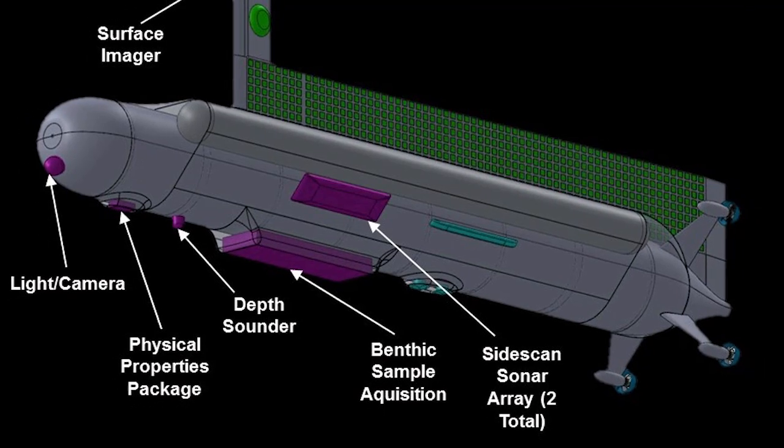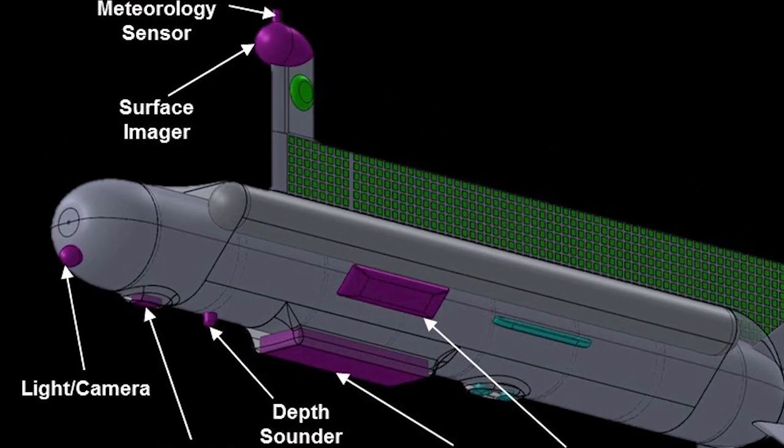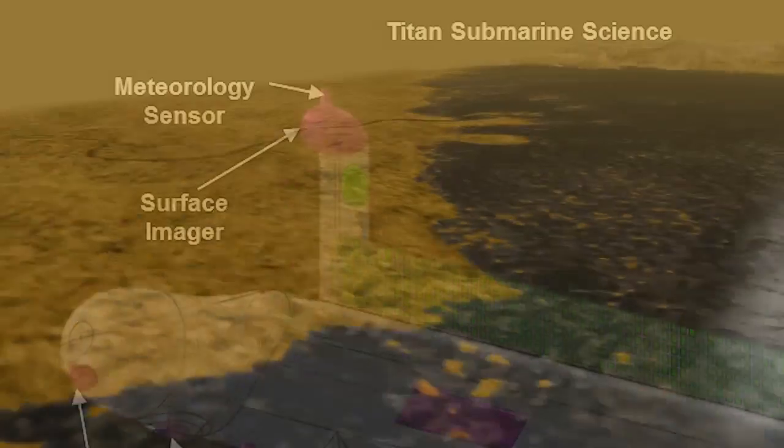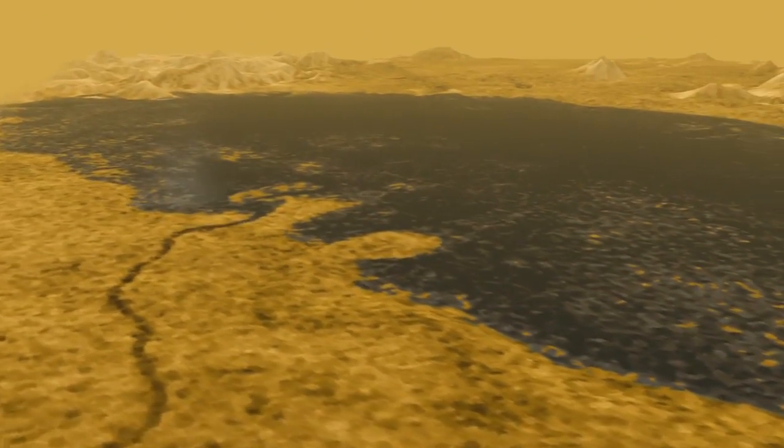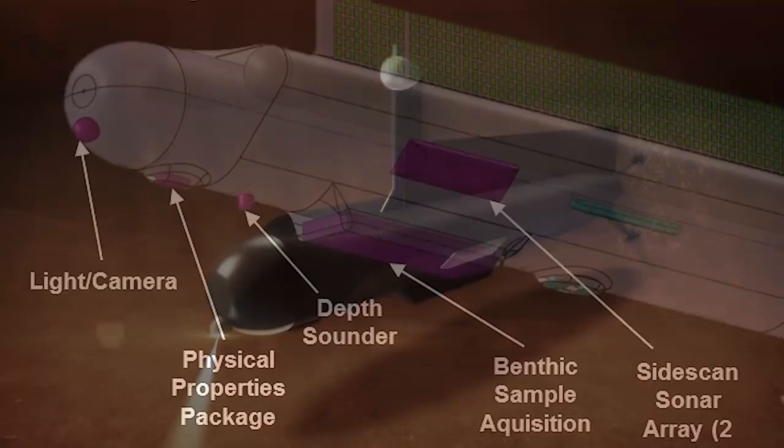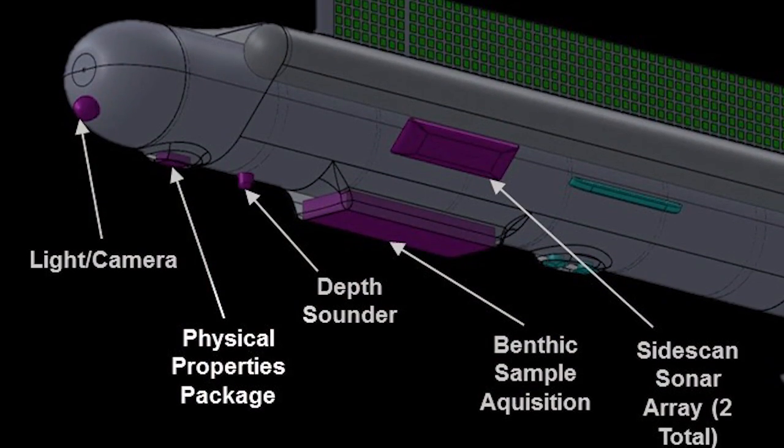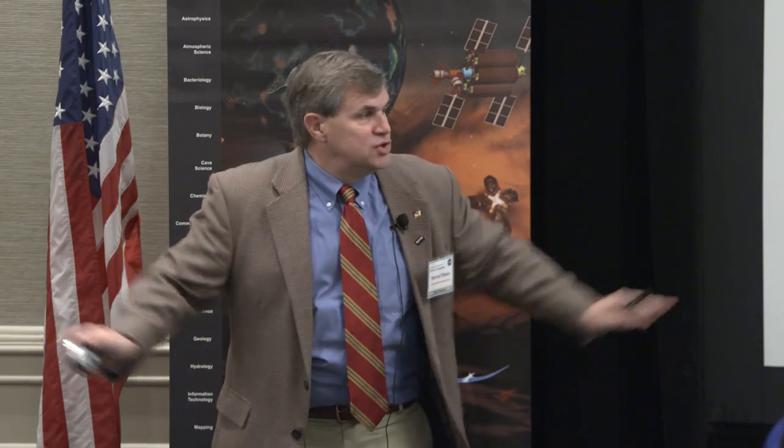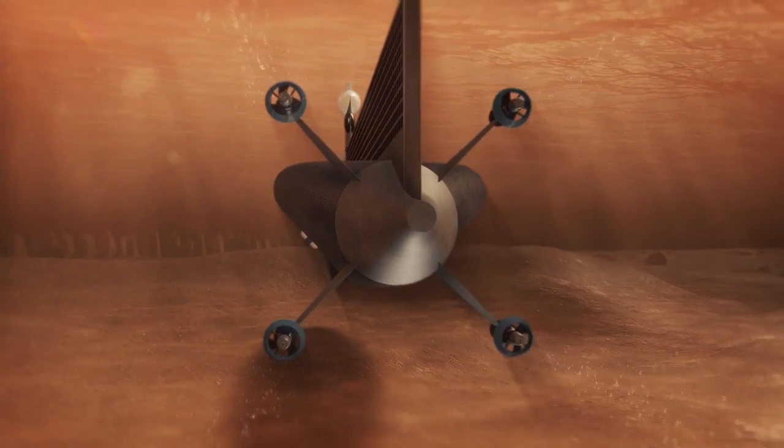So here's the submarine itself. Here's the science. There's surface science. So meteorology station here and a surface imager. Up high, you want to be able to see as far inland as possible. A light and a camera for when we're subsurface. Physical properties to basically bring in the fluid and analyze that as we move along. Depth sounder. And then, of course, the side-looking sonars, which looking down with the ship is nice, but looking sideways, you can get a lot more visibility there. So that's the science packages.